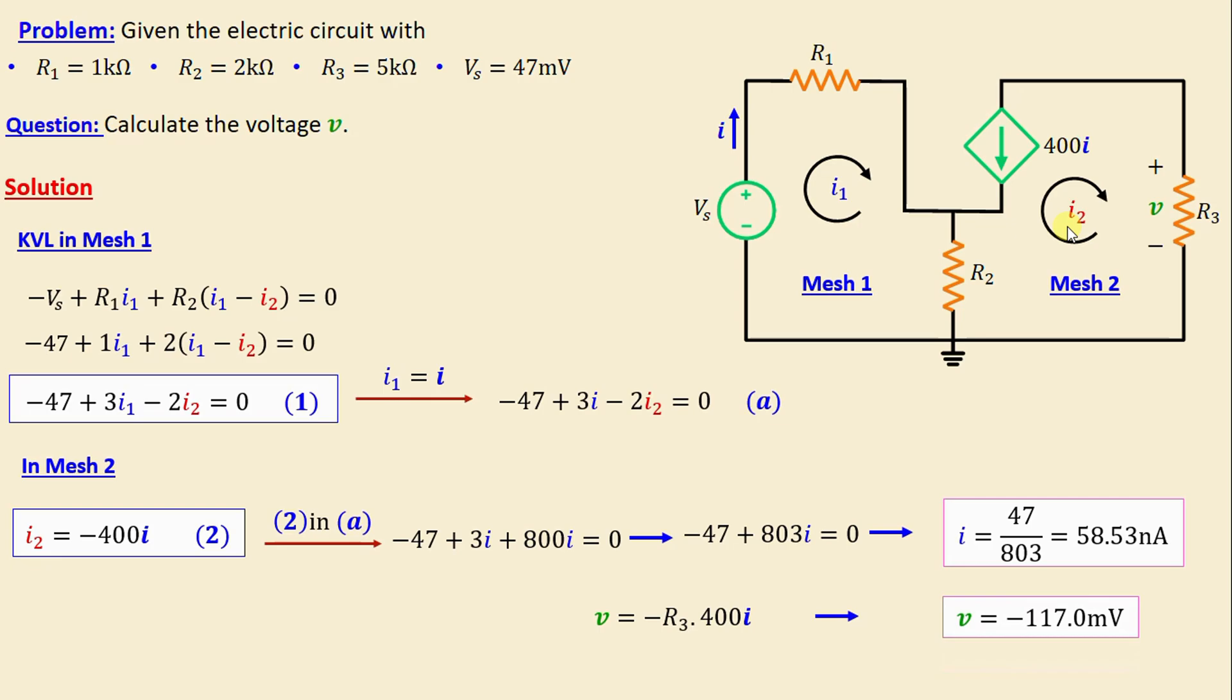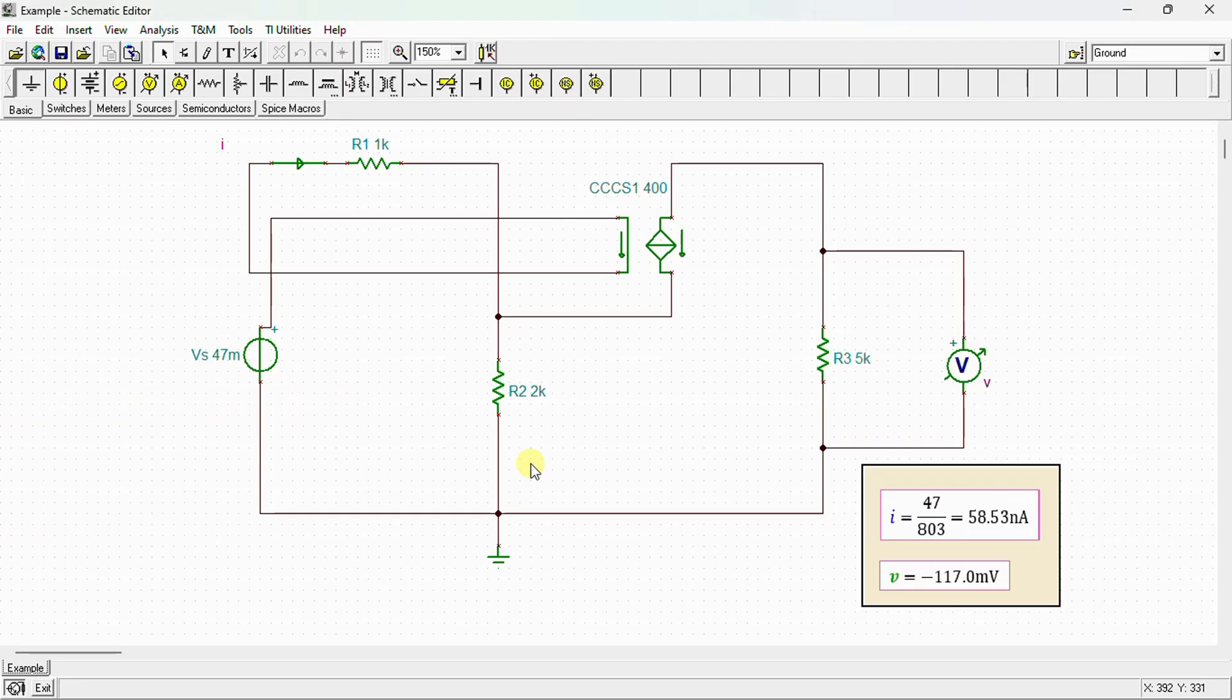After we finish calculation, we conduct simulation using the SPICE simulator to verify our results. Now let's proceed to the SPICE environment. Here is our network drawn in SPICE simulator: this is our independent voltage source Vs, resistors R1, R2, and R3, and this is the current-controlled current source.